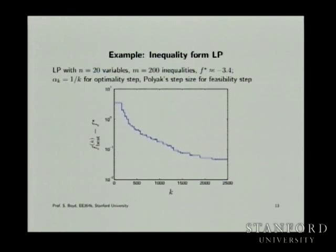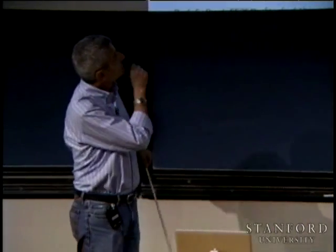When we do the feasibility step, you can do a Polyak step size. Because if you're doing a step on f_j, which is a violated inequality, you're specifically interested in f_j equals zero — so your step size can be the Polyak step size.